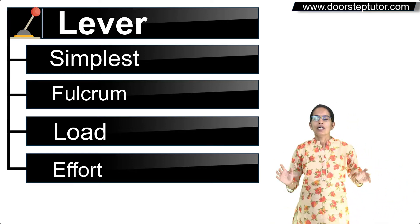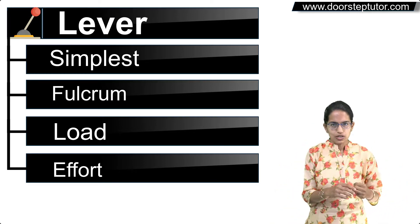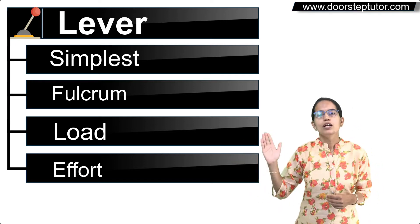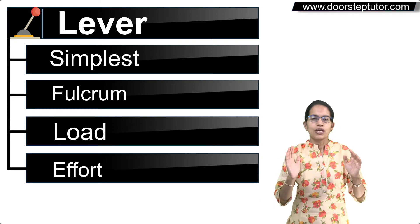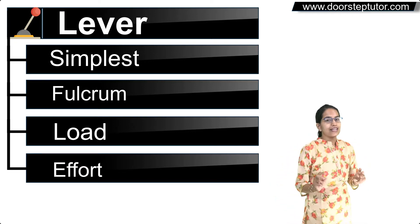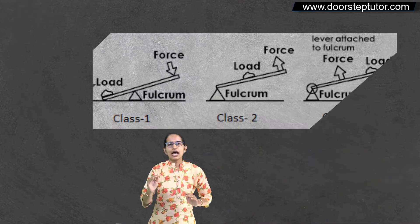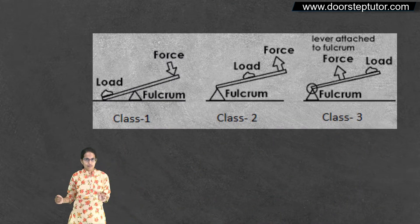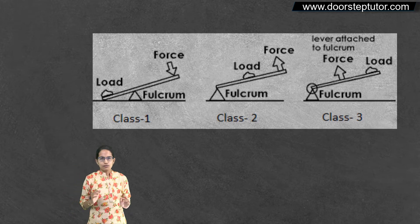So in levers we have three terms that we have to understand. Those are fulcrum, load, and effort. Now based on these three, there can be three combinations in which they can be placed. We call this class 1 lever, class 2 lever, and class 3 lever. Let's understand each of these one by one.